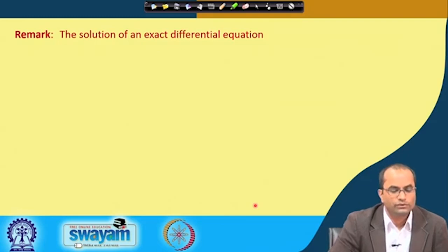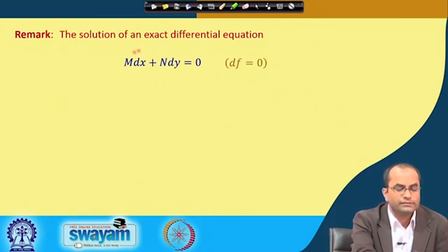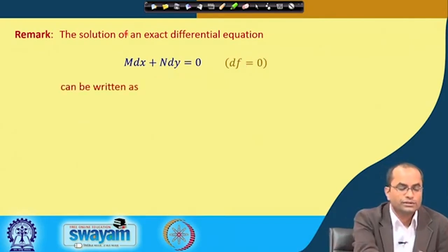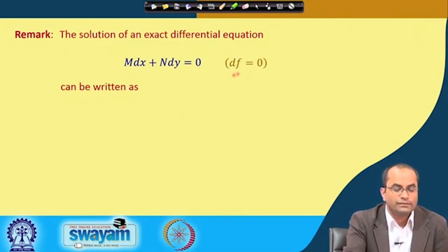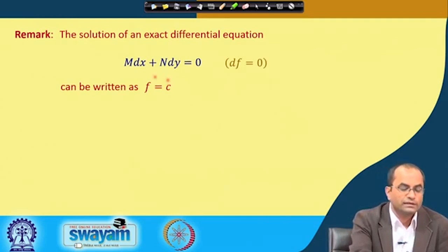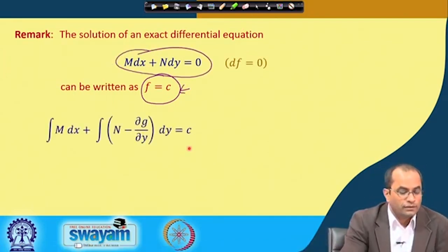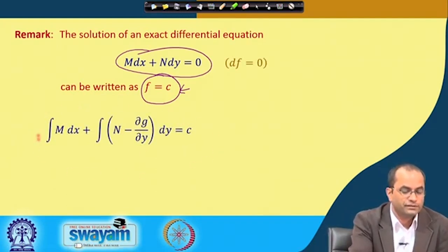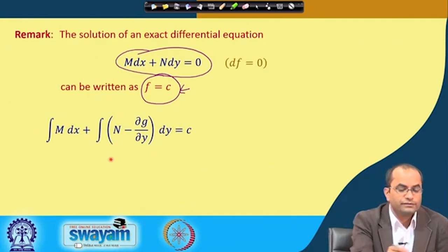A remark on the solution: once the equation is exact, df = 0, meaning there exists f whose differential is M dx + N dy. So df = 0 implies f = constant. The solution of the exact differential equation is f = c. The function f was constructed as ∫M dx plus the integral of (N − ∂g/∂y) with respect to y.